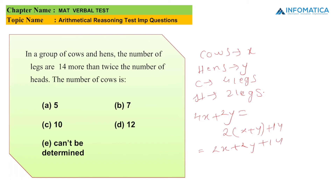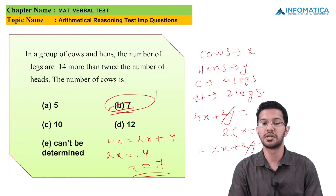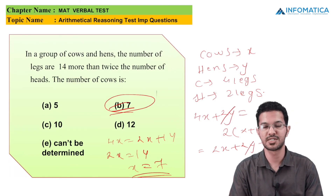Cancelling 2Y from both sides: 4X = 2X + 14, so 2X = 14, giving X = 7. Since X represents the number of cows, the answer is 7, which is option B. Thank you for watching this video. Stay tuned to Informatica and do subscribe to my channel!